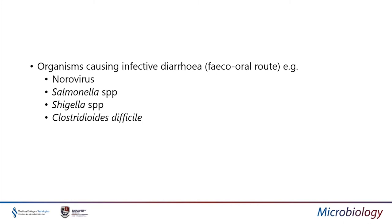It's important not to forget about infective diarrhoea. Although that involves faecal-to-faecal transmission, because organisms are present in infected bedding and on surfaces, they can also result in contact transmission. Examples include norovirus, Salmonella — which has a very low infective dose — Shigella, and Clostridioides difficile.